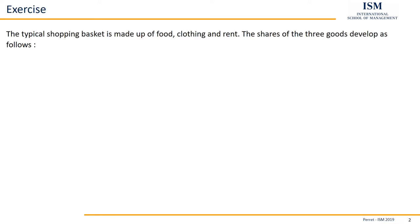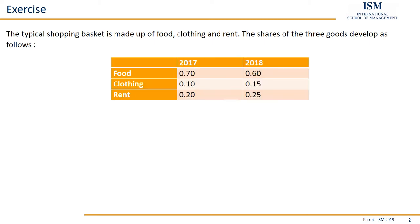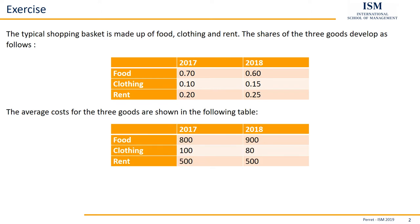Here we have the typical shopping basket, which is made up of food, clothing, and rent. The shares of the three goods develop as follows — here we have the overview. And the average costs for the three goods are shown in the following table, here, for the three goods and the two years we consider.